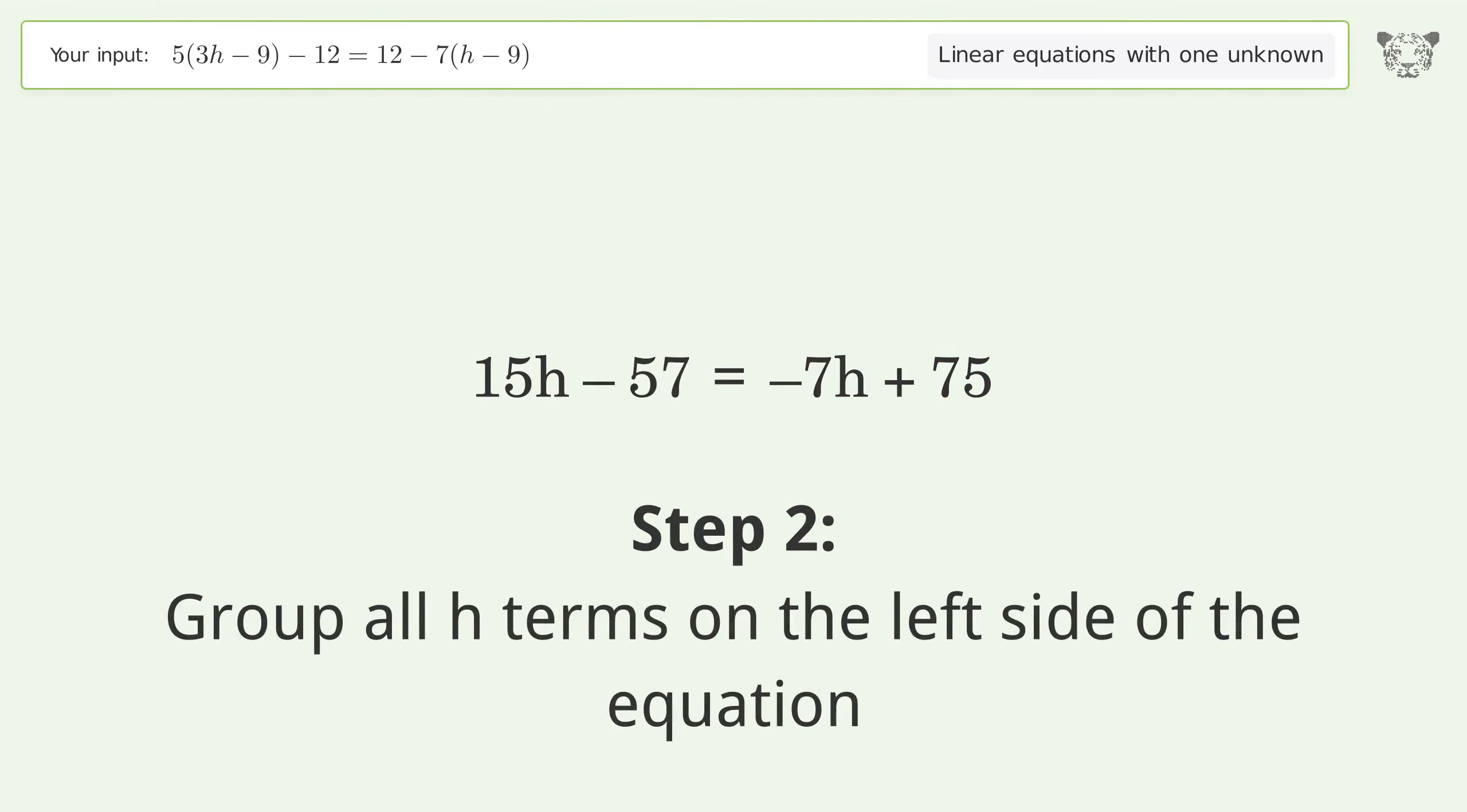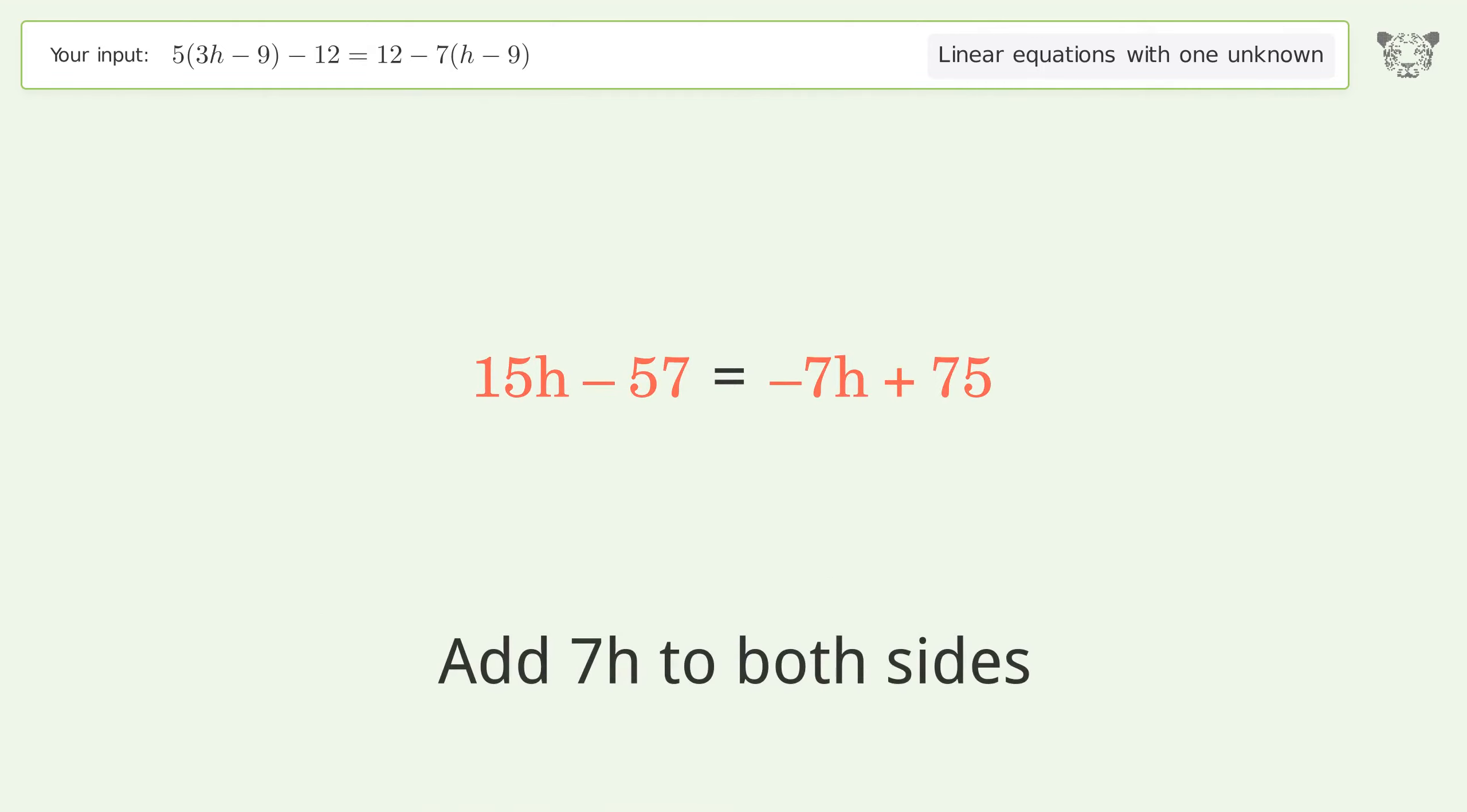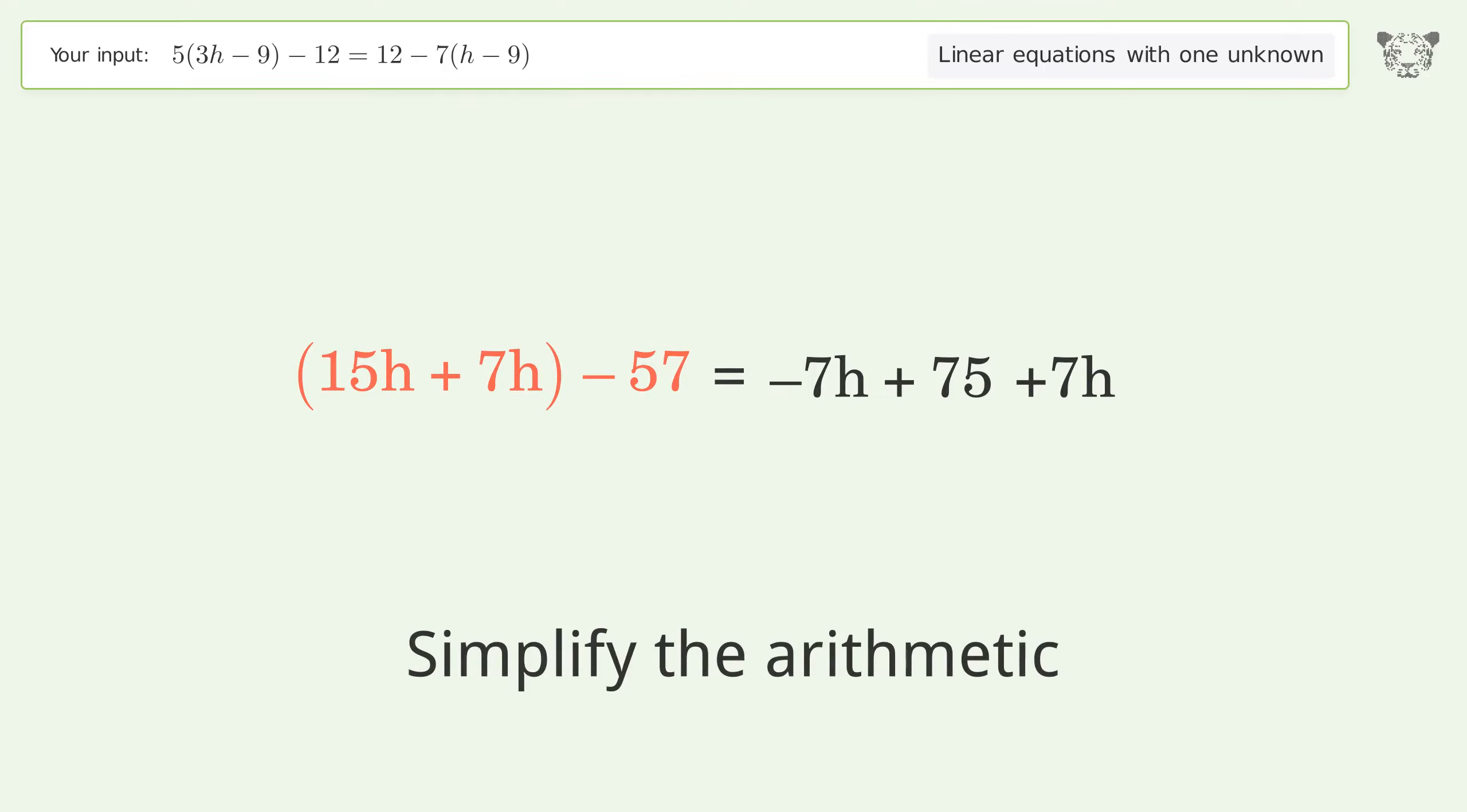Step 2: Group all h terms on the left side of the equation. Add 7h to both sides. Group like terms. Simplify the arithmetic.